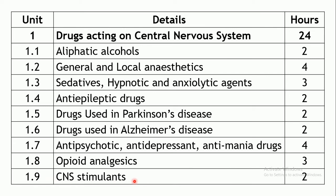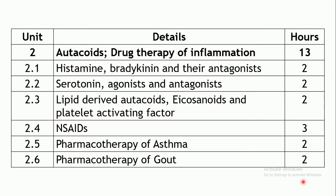The last chapter under CNS is CNS stimulant drugs — drugs that stimulate the CNS and result in excitation, generally inducing convulsions due to this property. Most are used as laboratory tools; certain drugs like amphetamines may be used to produce alertness in certain disorders. Two hours are allotted for this chapter.